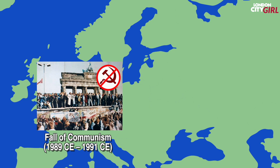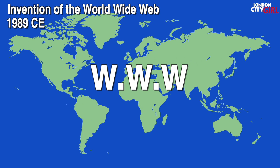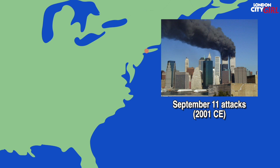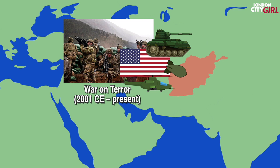In 1989 CE the World Wide Web was invented and that, along with the internet, revolutionised communication and created new industries. In 2001 CE the War on Terror began when Islamic fundamentalists attacked the Twin Towers in America. In retaliation the US invaded Afghanistan and radical religious terrorism remains a threat.